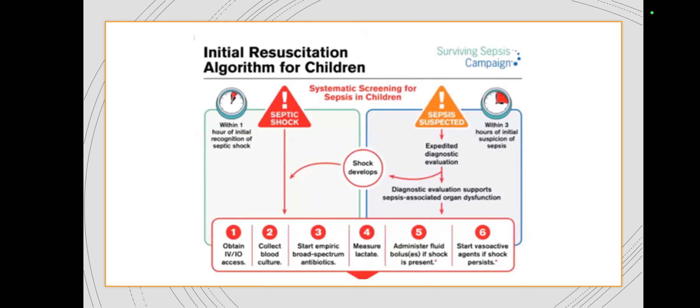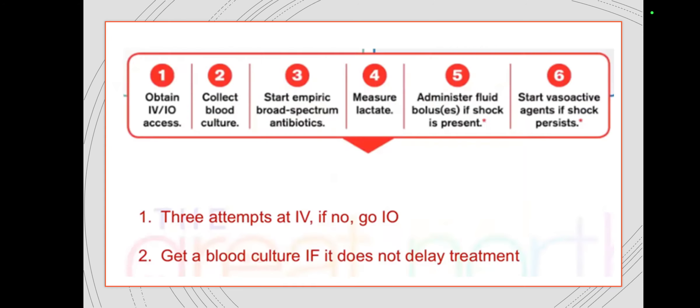For suspected sepsis, IV access is more likely; for septic shock, IO access may come in early. You will need to collect blood cultures as soon as you get IV access, start empiric antibiotics, and measure lactate from a venous blood gas — which is better than a capillary blood gas due to peripheral perfusion issues. Administer fluid boluses especially if shock is present, and start vasoactive agents if shock persists. Keep an eye on your time frames throughout.